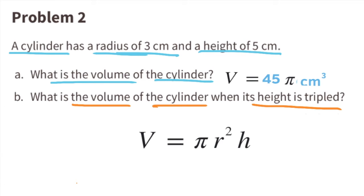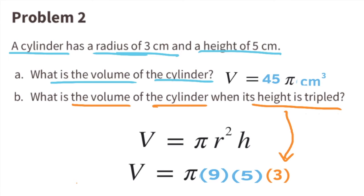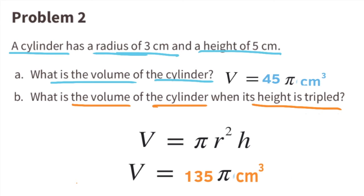Part B: What is the volume of the cylinder when its height is tripled? The radius stays the same, so we multiply the height by 3. The radius squared is 9, and the height is 5 times 3, which is 15. 9 times 15 equals 135. So the volume of this cylinder is 135π centimeters cubed.